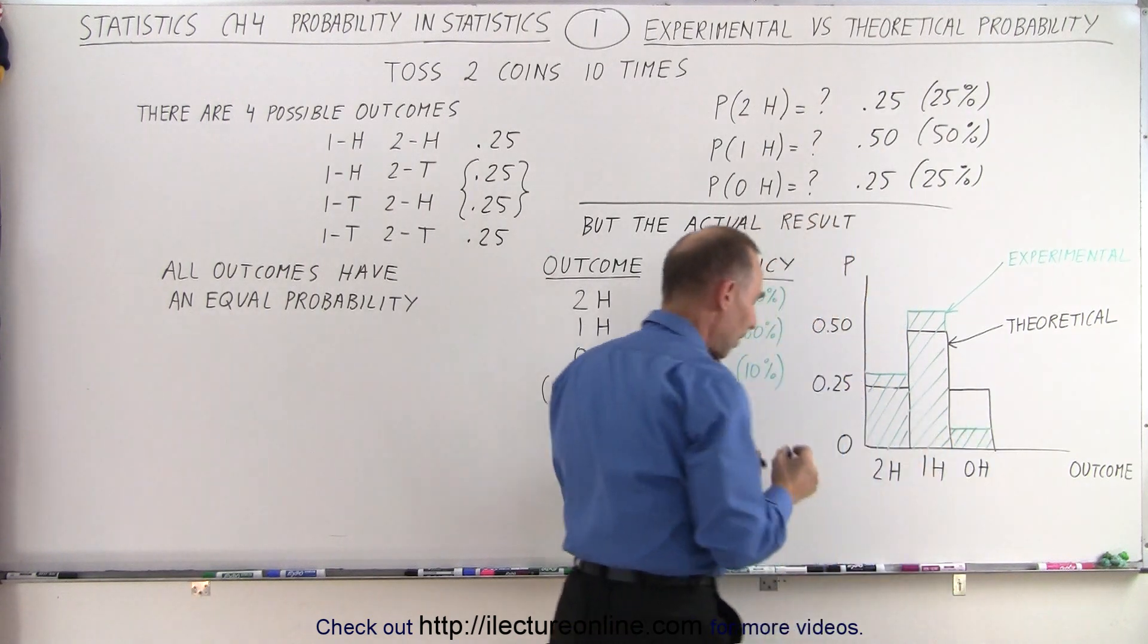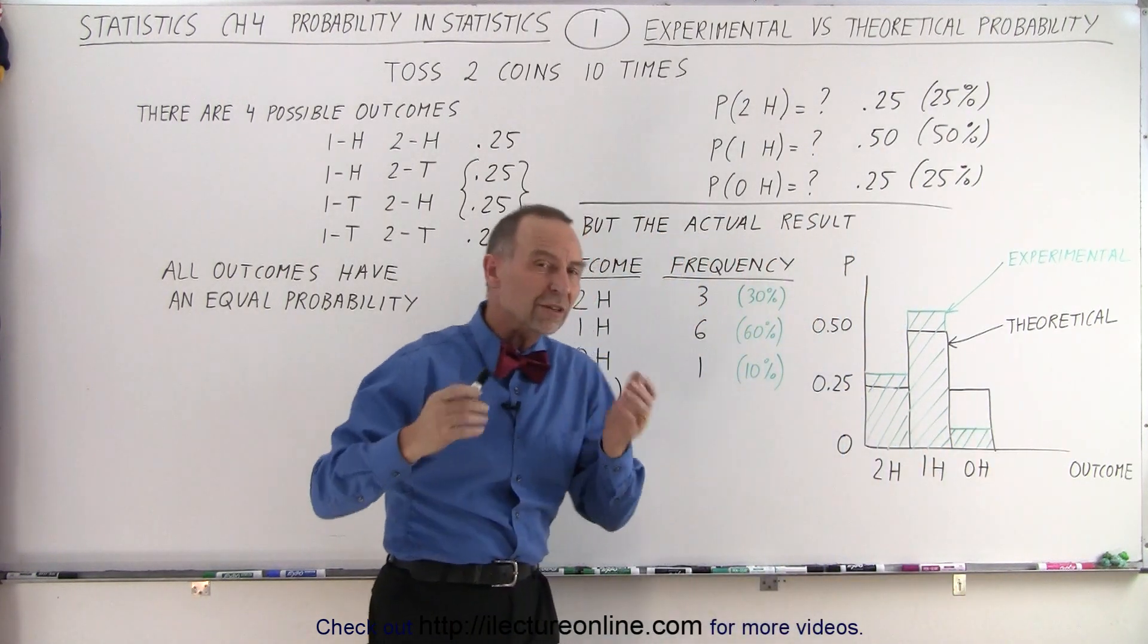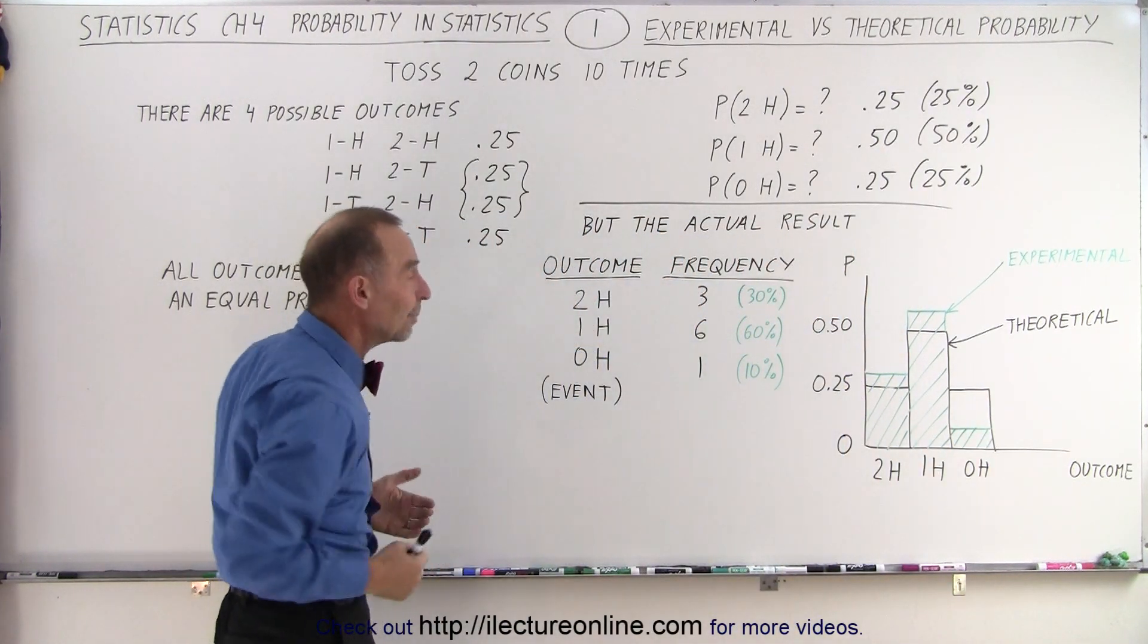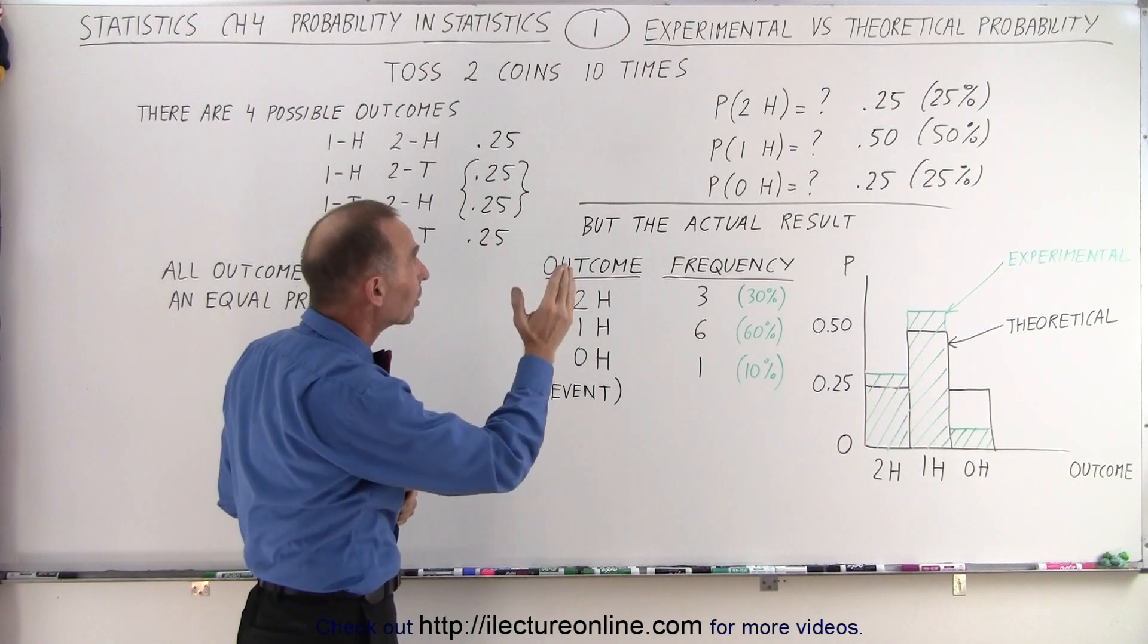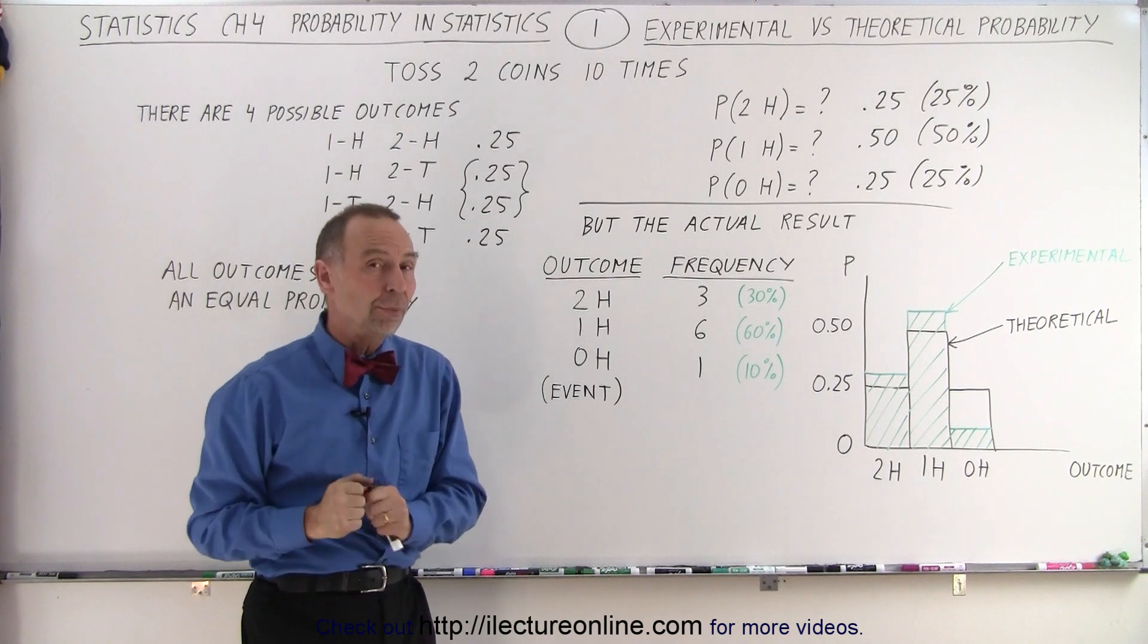But when we do an experiment, when we do this 10 times, is that what we're going to get? And that's the difference between theoretical and experimental probability.